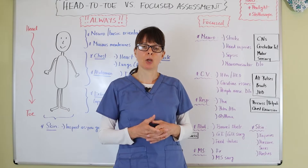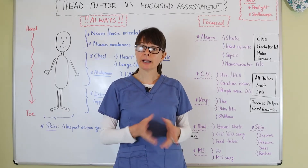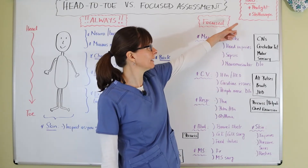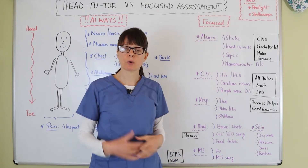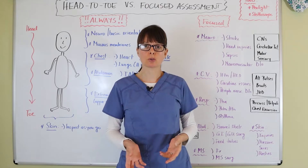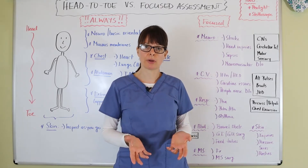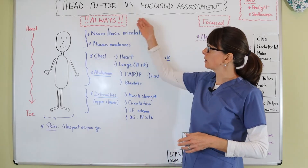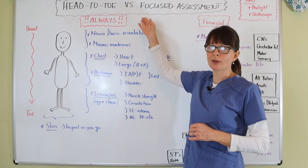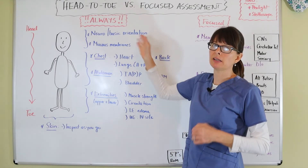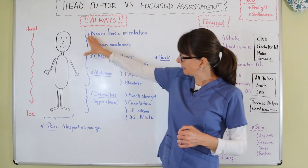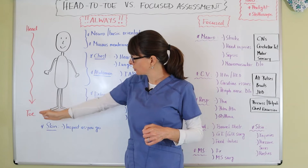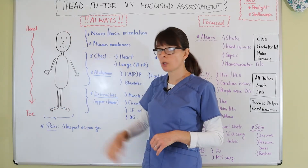So that we can make sure that they're okay and progressing accordingly so that they can heal and get better. In any kind of assessment we need our basic tools — generally that means our pen light and stethoscope, and then of course any PPE that applies to your patient care scenario. The things that we will always assess — you cannot skip any of these parts. We always focus on the head to toe, starting on the top and working our way down.